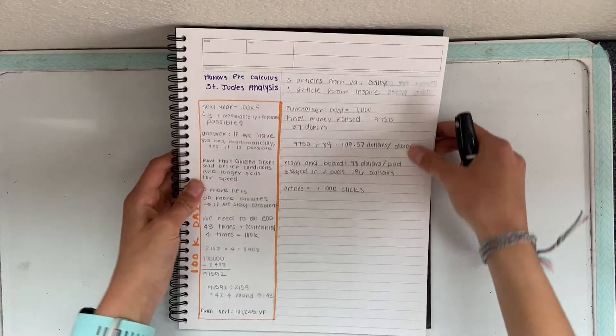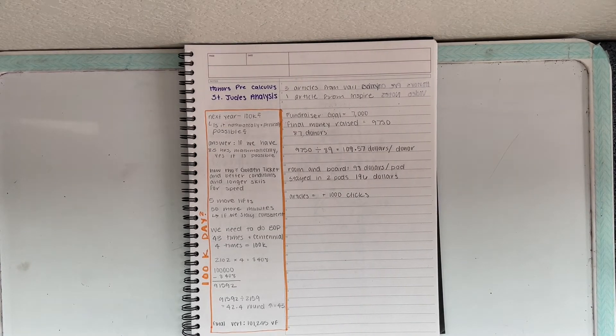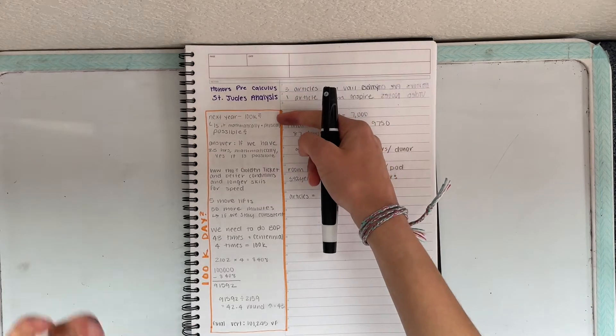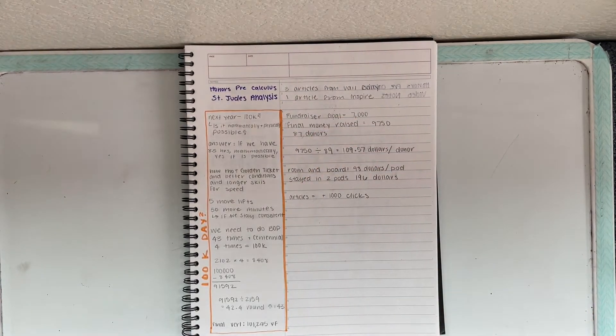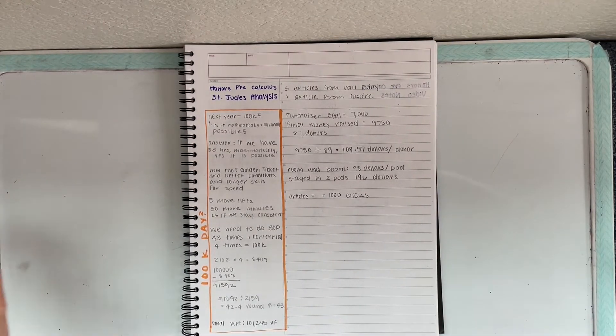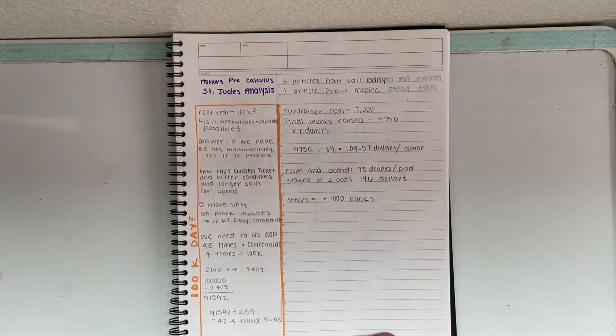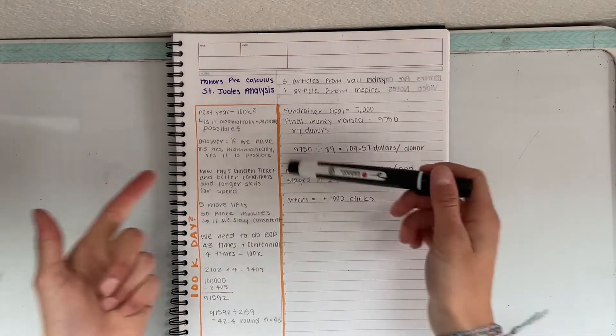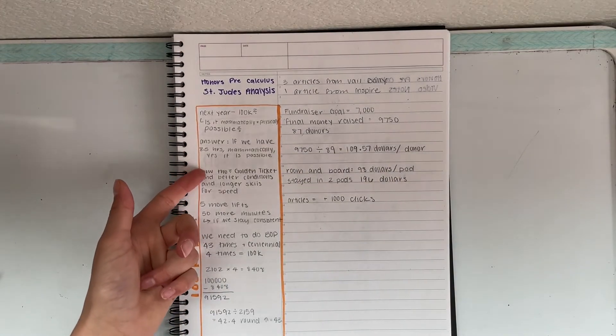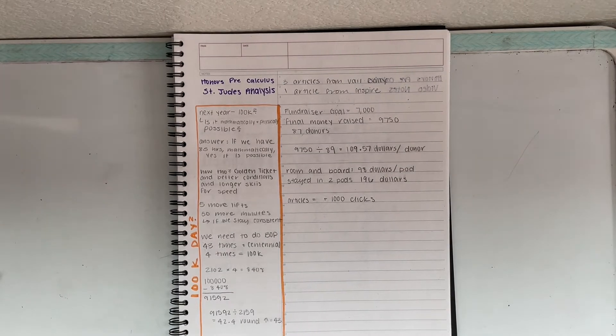Now let's flip over to this other side. So next year we were, we got multiple articles written about us. So next year people are wanting us to do a hundred thousand vertical feet. So now that I know the times that Carter and I were able to get, I was able to calculate, is this even mathematically possible? Because that was the whole start of my project. So we'll see if this is even possible. So the answer is that if we have 8.5 hours, then mathematically, yes, it's possible.